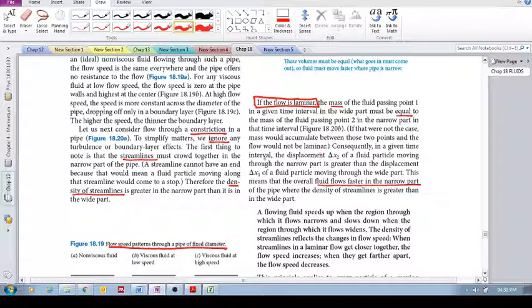In a given time interval, the displacement delta x2 of a fluid particle moving through the narrow part is greater than delta x1. This means that the overall fluid flows faster in the narrow part.